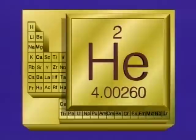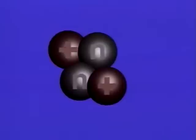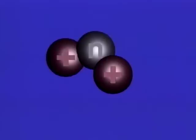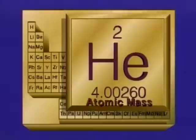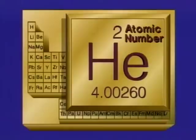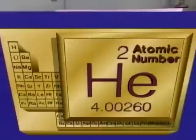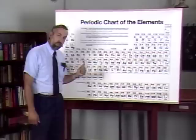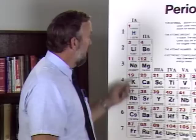Besides a symbol for the element's name — in this case helium — each box also contains some important numbers. The number below the He symbol is the atomic mass of the element, the total mass of the protons and neutrons. All helium nuclei contain two protons; however, the number of neutrons may vary. There is a rare form of helium which has only one neutron in the nucleus. The two varieties of the same element are called isotopes. The atomic mass is the weighted average of the masses of the isotopes in the naturally occurring element.